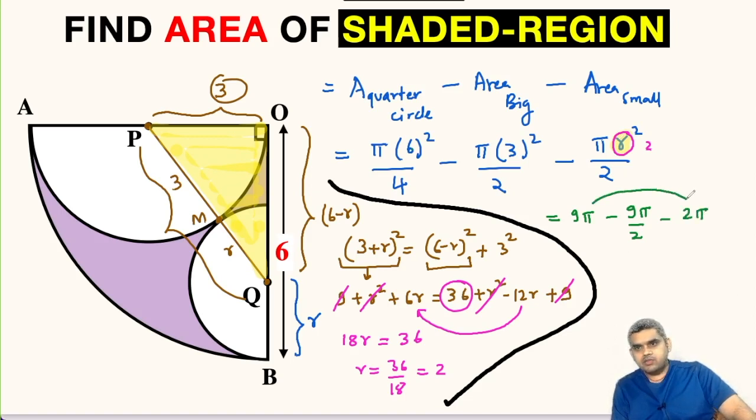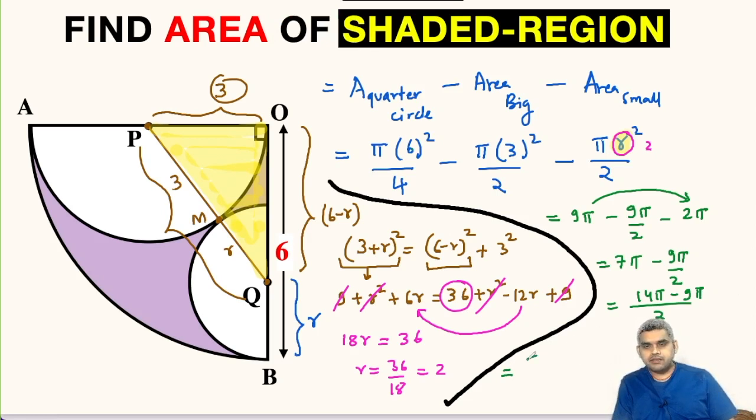We can subtract 2π from 9π, so we will get 7π minus 9π divided by 2. We will take LCM as 2, so this will be 14π minus 9π which is 5π. So the area of this shaded purple region will be 5π divided by 2 square units.